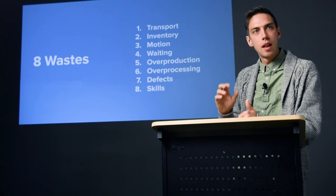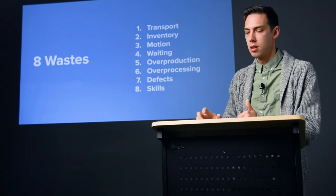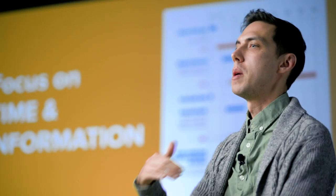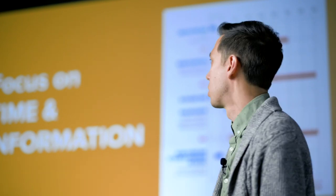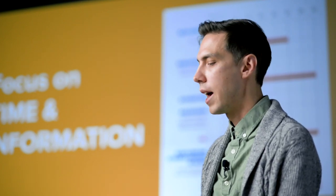That's one example of looking for waste and applying it. You can see how understanding this can help your design process even without doing a full value stream map. Here's an example of a design-focused value stream map for a doctor's office — focusing on time, information, and waiting. You can see where value is added: signing in, speaking with the doctor, returning to the front desk. Then you focus on the wait time between those steps. Even something simple like that can be very valuable.